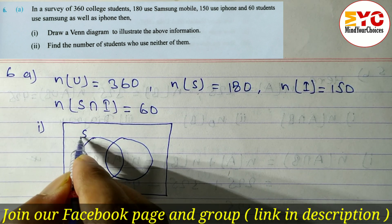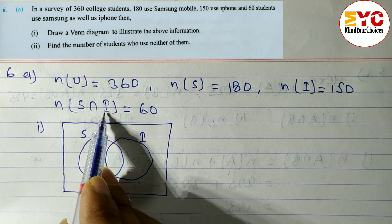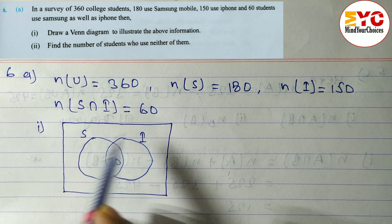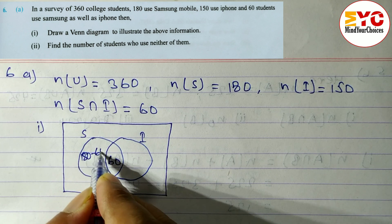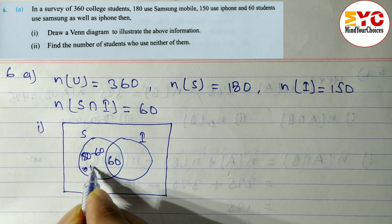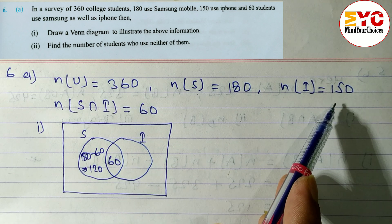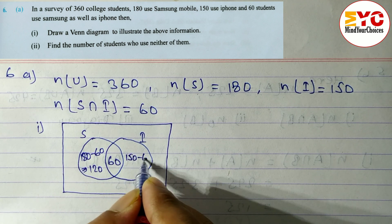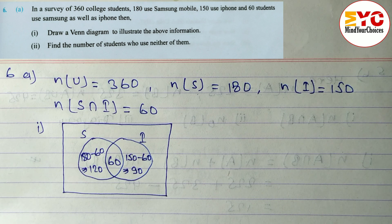Here this circle is for Samsung and this one for iPhone. The intersection — students who use Samsung as well as iPhone — is 60, so we write 60 in the middle. Samsung only: 180 minus 60 equals 120. iPhone only: 150 minus 60 equals 90. So 90 students use iPhone only.